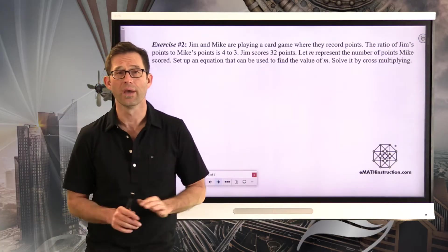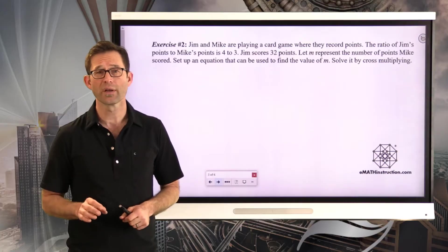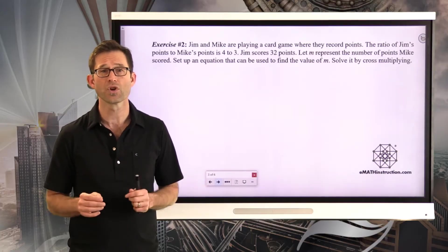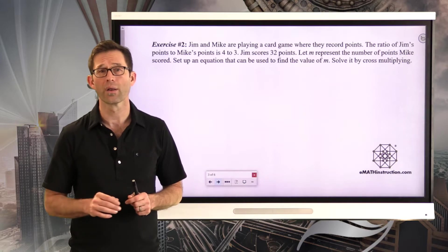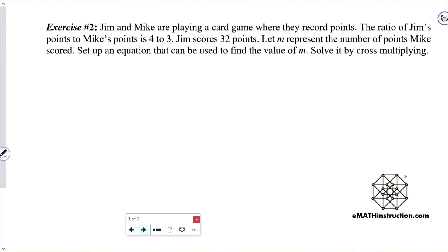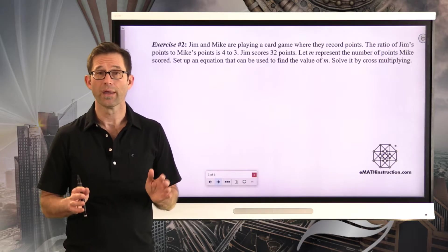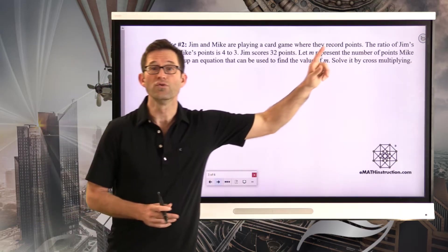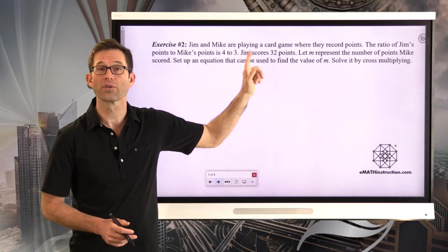The whole point today is to use one of those two algebraic techniques after we've set up these ratio equations to solve for whatever quantity we're looking for. Let's see how that pans out in exercise number 2. Jim and Mike are playing a card game where they record points. The ratio of Jim's points to Mike's points is 4 to 3. Jim scores 32 points.